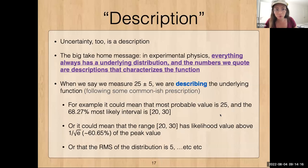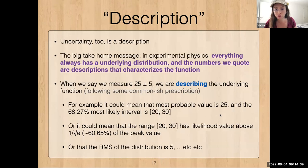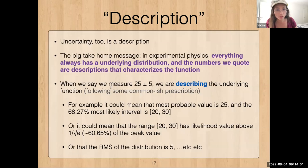This is important because uncertainty is also a description of the function. I think this is probably the most important message for this talk: at least in experimental physics, everything has an underlying distribution — whether it's the likelihood or not — and the numbers we quote are descriptions that characterize the function. Uncertainty is usually something that characterizes some sort of width of the function at the core.